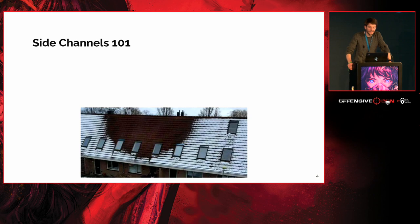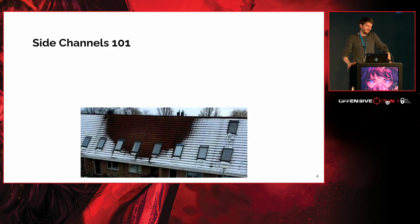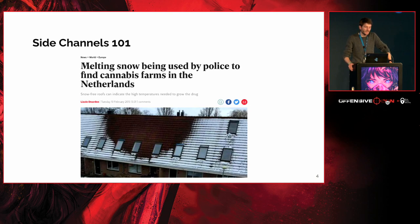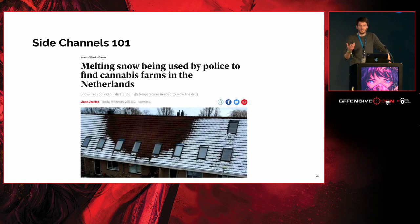Let's start with something funny. Just by looking at this image, you can see something is odd — a roof with melted snow. Just by walking on the street and seeing this is suspicious. We think this is a perfect example of a side channel, because the Dutch police managed to find guys growing illegally weed in their apartment just by looking at the roof, since the high temperature was melting the snow.